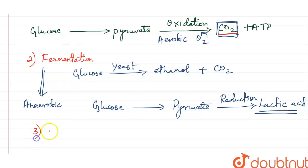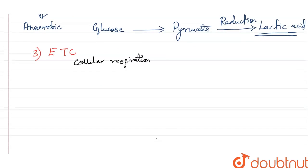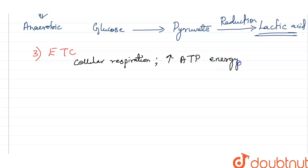The third option is the electron transport chain, which is a very important process in cellular respiration. During this, there is movement of electrons from one molecule to another in different compartments of the mitochondria, and a high amount of ATP is produced, enriching the cell's energy. There is no carbon dioxide involved in the electron transport chain.